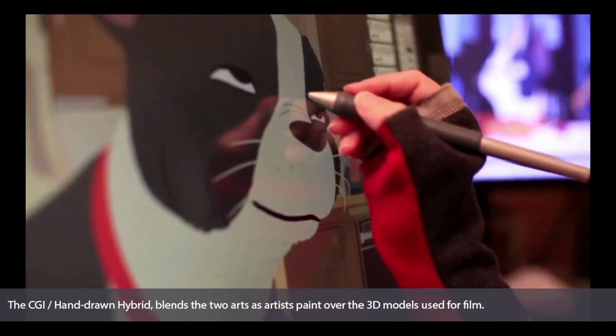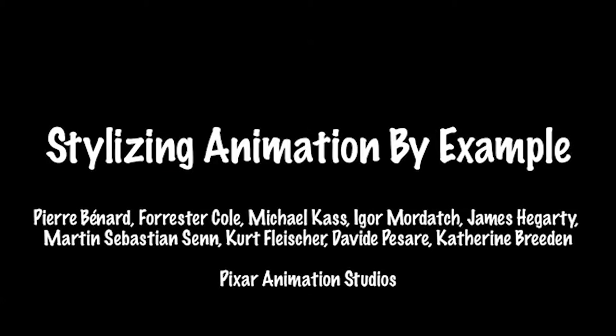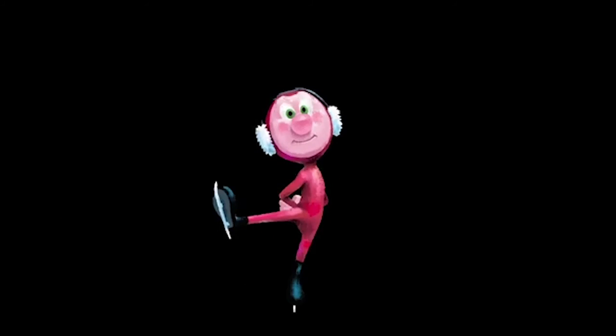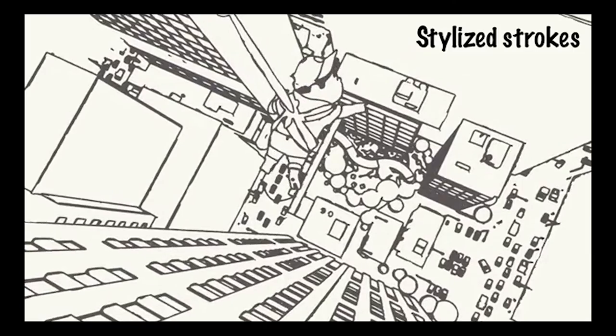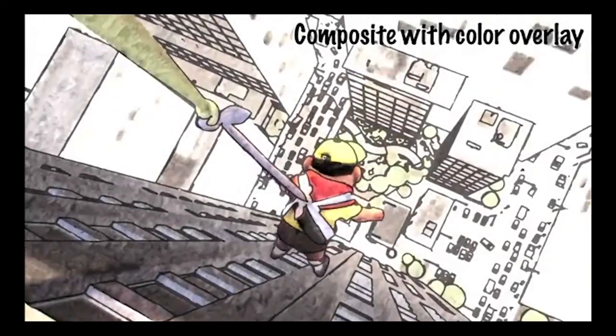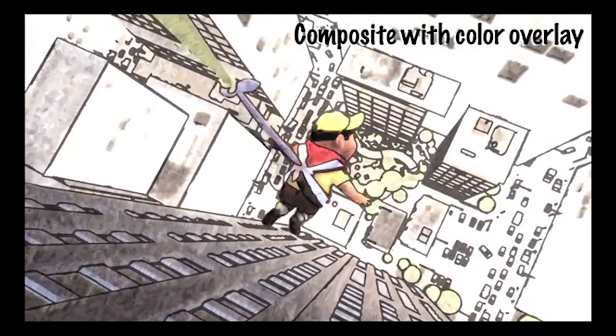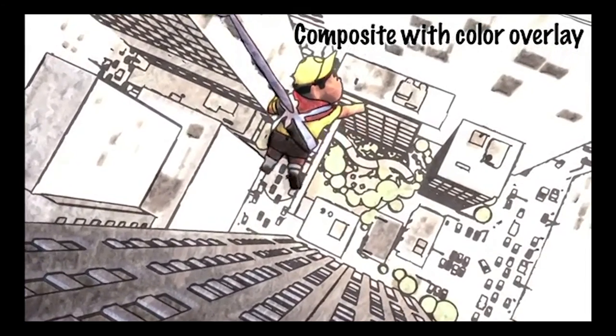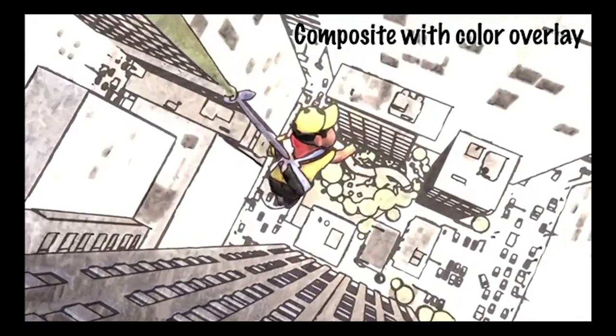These ideas of placing 2D art over 3D are also discussed in the SIGGRAPH paper Styling Animation by Example, in which experiments with painting over key frames of animation are explored, with frames blended to create a seamless digitally painted yet CGI character. The paper also discusses overlaying CGI footage with textures such as traditional paintings, hatching, line drawing, and watercolor. While no feature films are currently announced using these techniques, the future of film looks exciting.